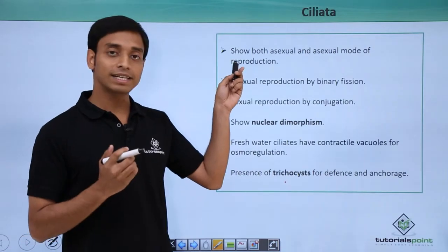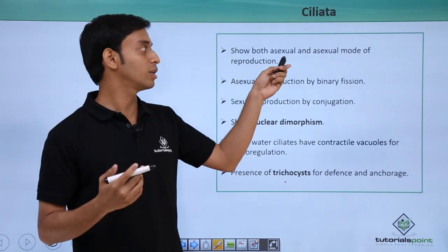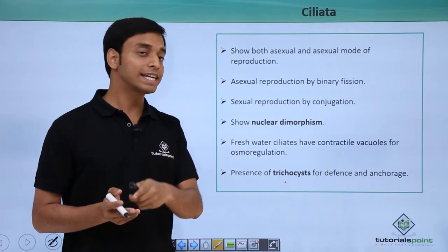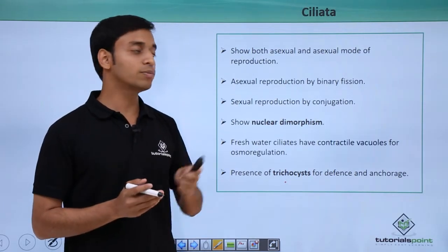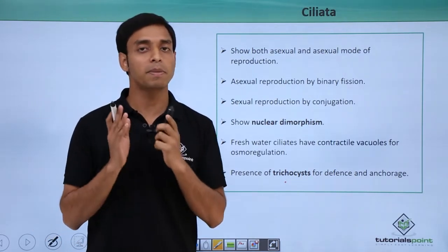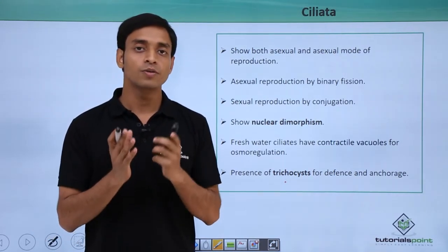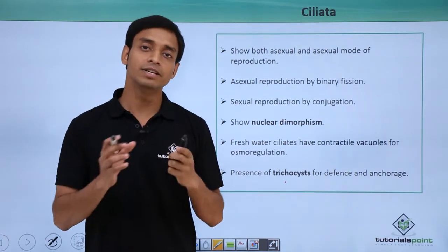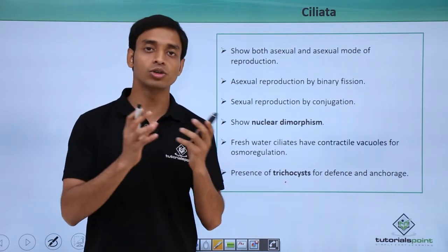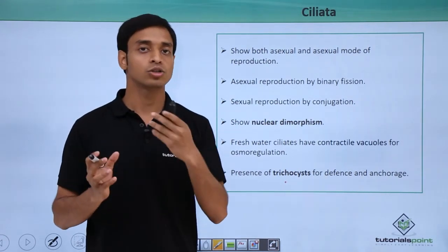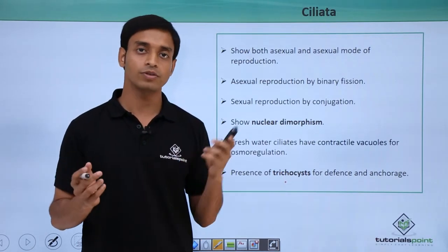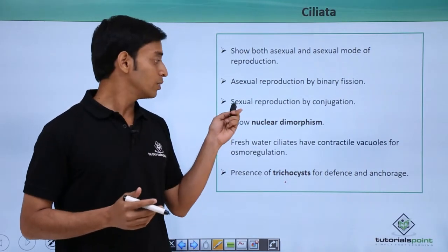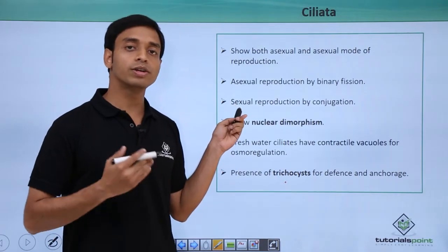The Ciliata can show both sexual and asexual modes of reproduction. In the case of asexual reproduction, it is mostly by binary fission, where the parent cell divides equally into two daughter cells — so two equal daughter cells are formed, which is binary fission.